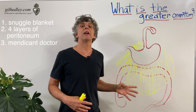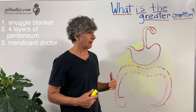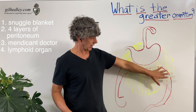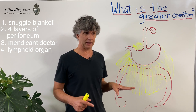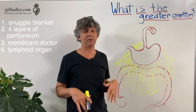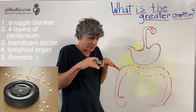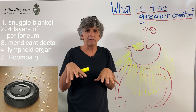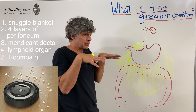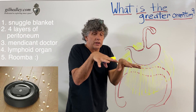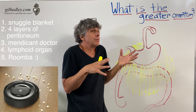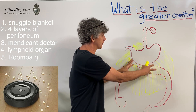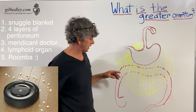You can think of the greater omentum as a lymphoid organ — meaning it has to do with the lymphatic system. There's lots of lymphatic tissue in the greater omentum. Here's one more metaphor: it's like a Roomba — those little vacuums that go around your home, bump into things, then turn and vacuum somewhere else. The greater omentum is kind of like that, going around vacuuming up whatever might be leaking out there and drawing it back into the bloodstream, back into the general circulation.